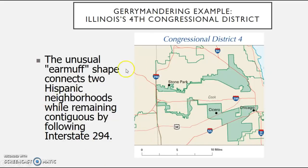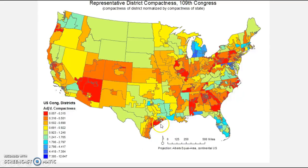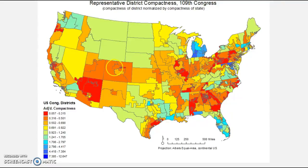There are even instances with three separate districts in the same neighborhood. Illinois's 4th District is an unusual earmuff shape that connects two Hispanic neighborhoods — they are technically contiguous because the boundary runs along I-294. Race as a determinant factor in creating a district is something we'll come back to. Some states like Idaho can't gerrymander too much, and states like Montana and North Dakota don't have to worry about it at all since they only have one member.